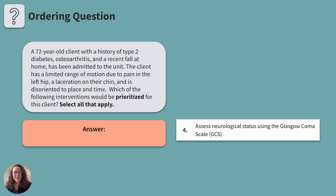Fourth, assess neurological status using the Glasgow Coma Scale, or the GCS. What circumstances would indicate using the GCS to assess a client? Clients experiencing altered mental status, decreased level of consciousness, or neurological impairment. This client experienced a fall that resulted in a laceration to their chin. This injury, along with the client being disoriented to place and time, could indicate potential neurological issues resulting from the fall. The GCS score provides objective data that can be used to guide treatment and predict outcomes, making it a great intervention for this client.